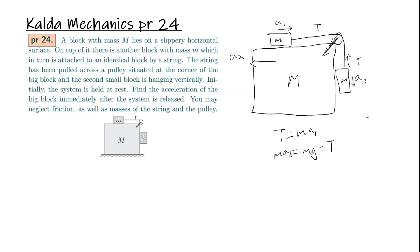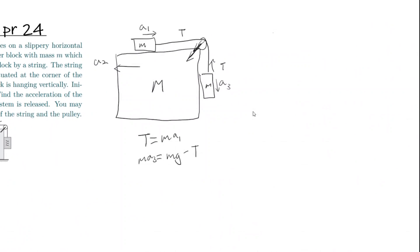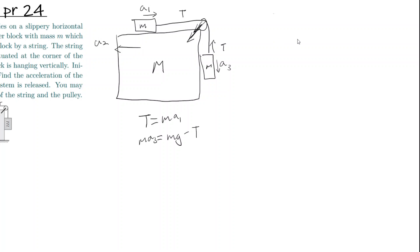So let me move over. If we consider the string itself there's going to be a force of tension on this side T and a force of tension on this side T, and then there's going to be whatever the force, let's say N from the pulley is. Then just by Pythagorean theorem, N equals T root 2.